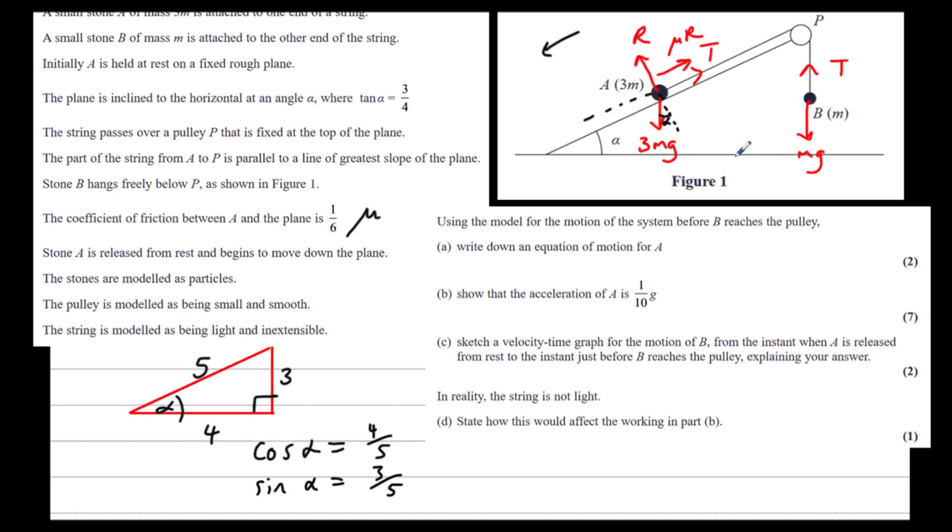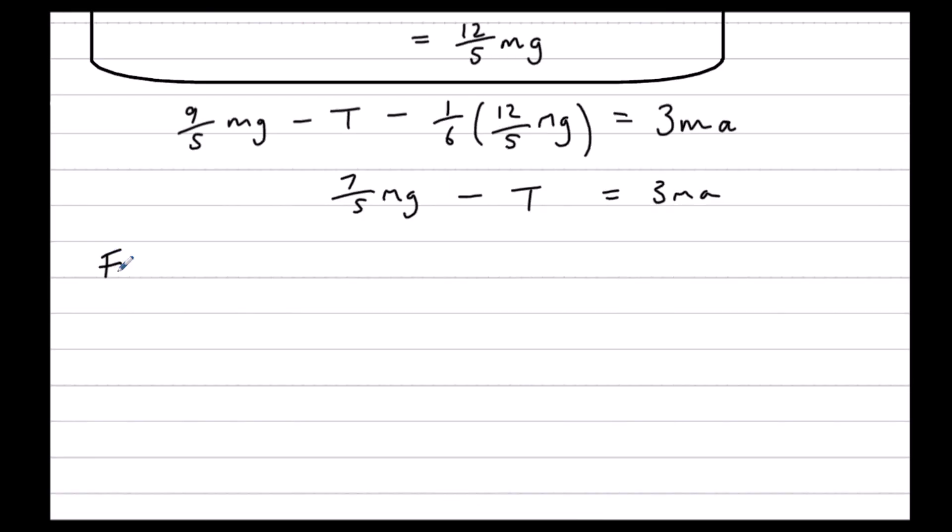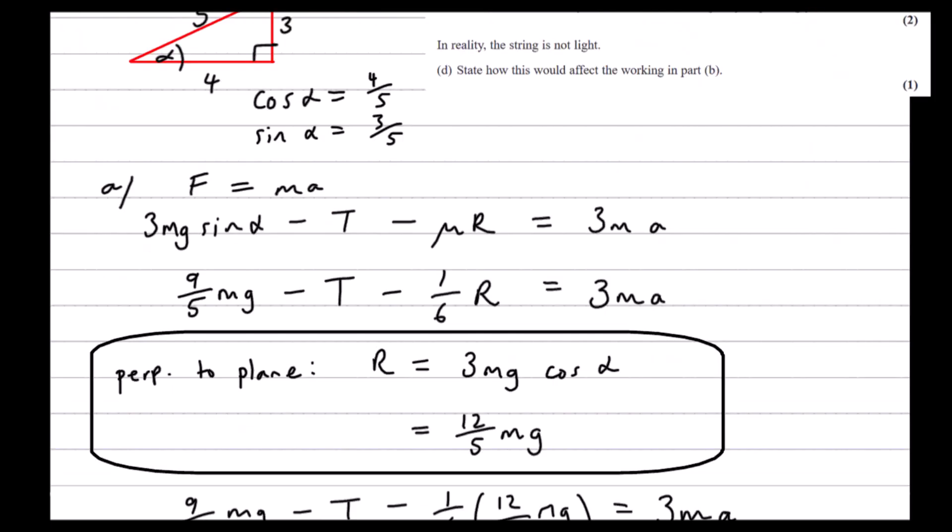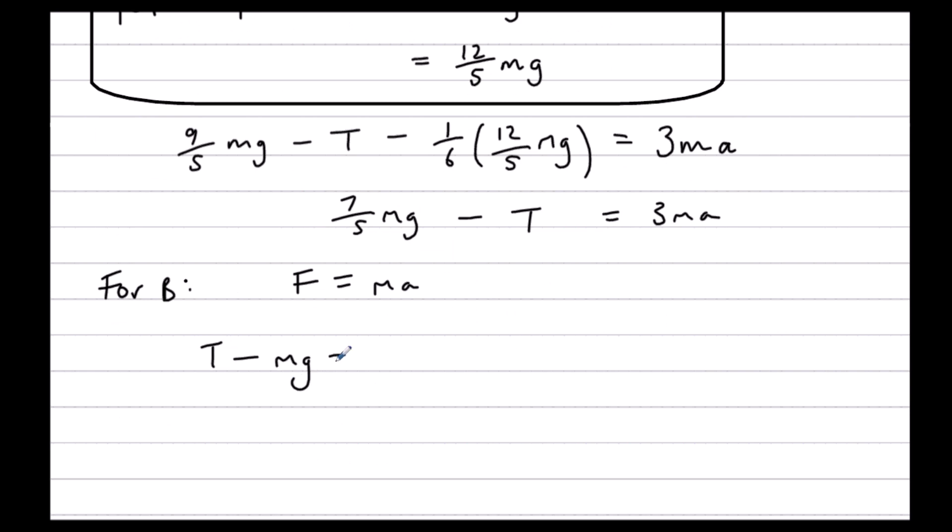An equation of motion for B will be F equals MA. We've got T going with the motion, mg opposing it. So T minus mg equals ma. So tension is equal to ma plus mg. We can substitute that in to our equation for A.